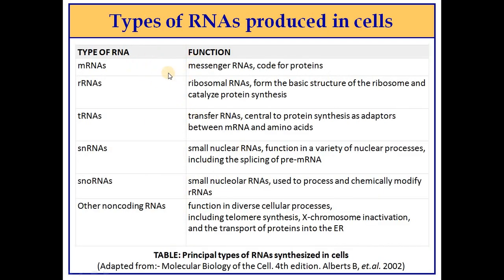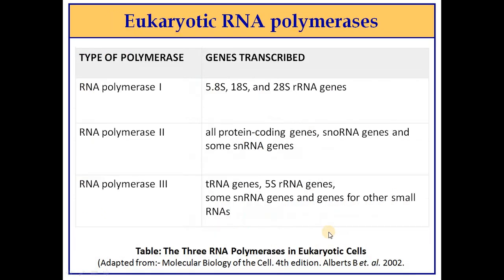The types of RNAs produced after transcription include: mRNA — messenger RNA that codes for protein; ribosomal RNA that forms the basic structure of the ribosome and catalyzes protein synthesis; transfer RNAs which are central to protein synthesis as adapters between mRNA and amino acids; snRNAs — small nuclear RNAs — that function in nuclear processes including splicing of pre-mRNA; snoRNAs used to process and chemically modify rRNAs; and other non-coding RNAs involved in telomere synthesis, X-chromosome inactivation, and protein transport.